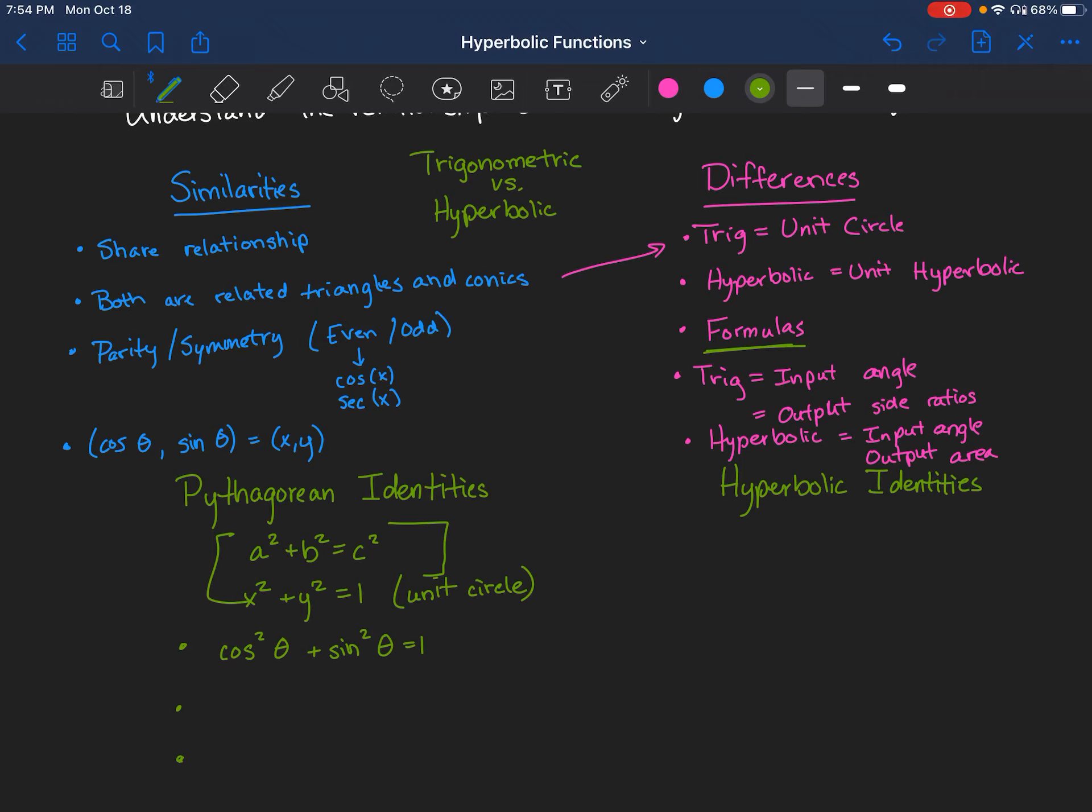The next one would be one plus tangent squared theta equals secant squared theta. Here's the trick. If you ever get stuck and forget these, what I do is I just divide this by cosine. Cosine divided by cosine gives me one. Sine divided by cosine gives me tangent. One divided by cosine gives me secant. And you can do the other one for the last one. So cosine divided by sine gives me cotangent squared.